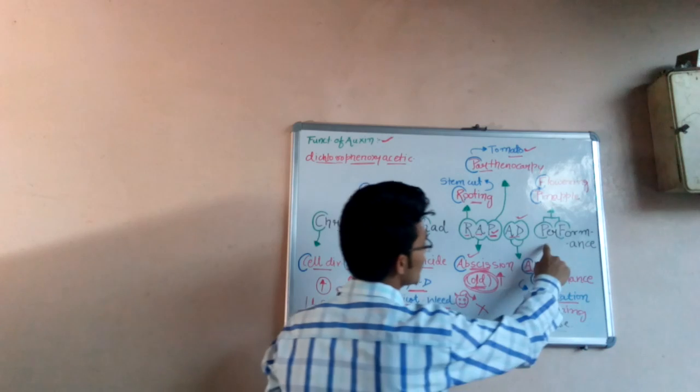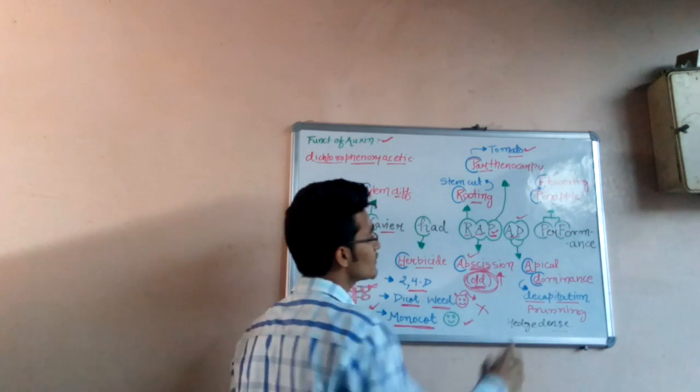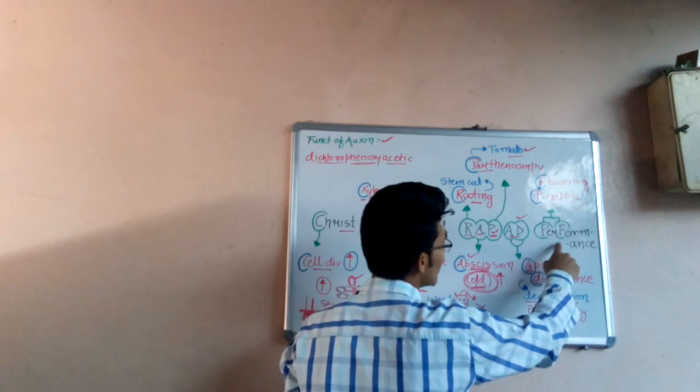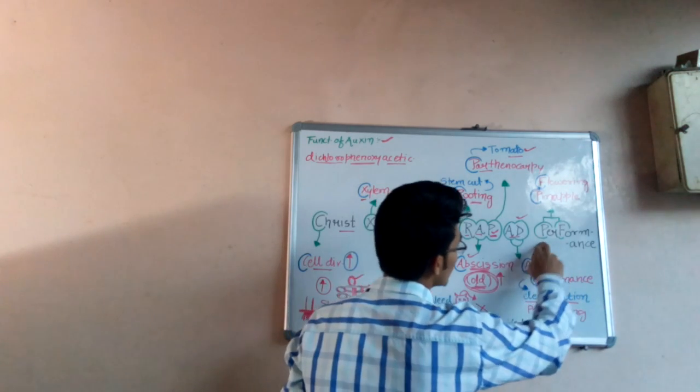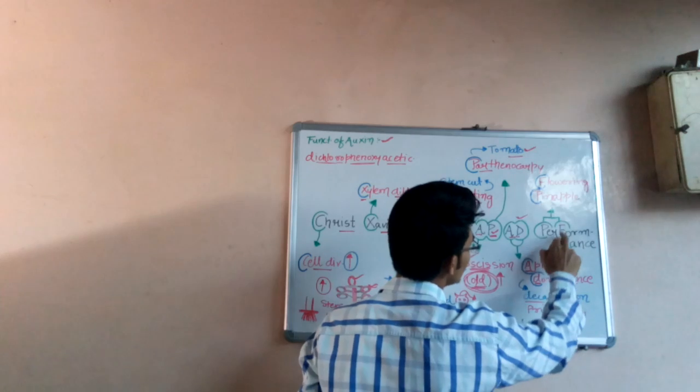Now the next function is perform, and I have chosen capital letters P and F in this particular word. The P and F means pineapple and F means flowering.